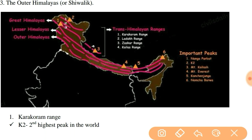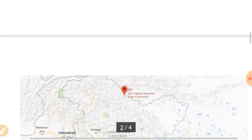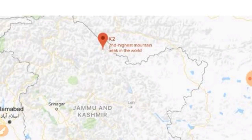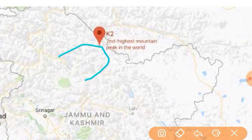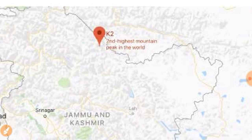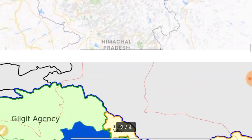The first Trans-Himalayan range is the Karakoram range. This range has the world's second highest peak, K2 mountain. K2 is India's first highest peak. The world's first highest peak is Mount Everest, which is in Nepal. The K2 mountain is located in the Baltistan province of Pakistan-occupied Kashmir, a region that has been occupied by Pakistan illegally.